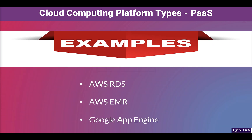Some more examples of platform as a service: AWS has many PaaS services such as Elastic Beanstalk and AWS RDS, to name a few. Google App Engine is also an excellent example of platform as a service. Another practical example is organizations setting up big data stacks like Hadoop and Spark as a platform as a service.